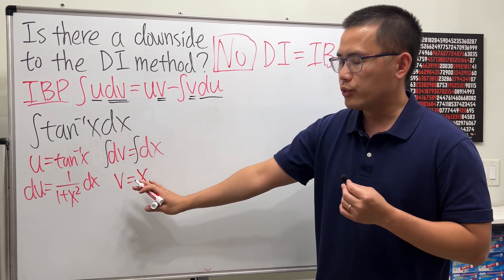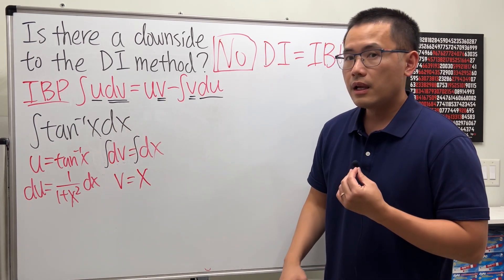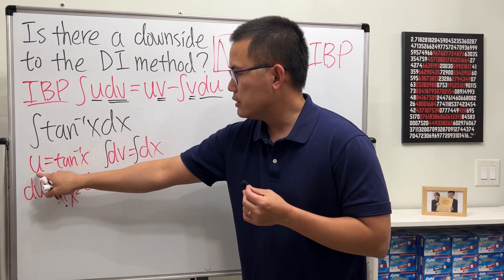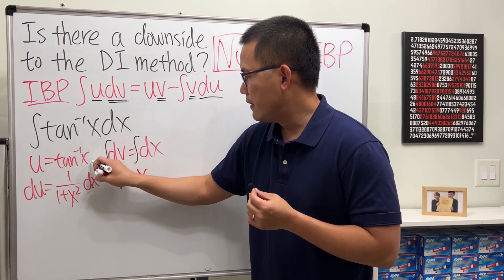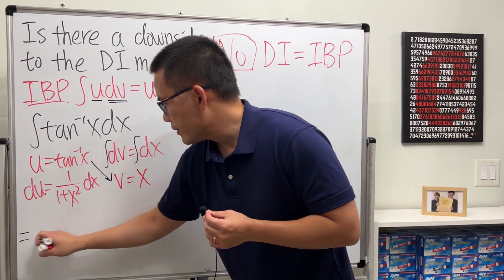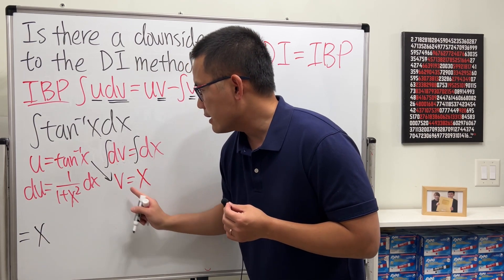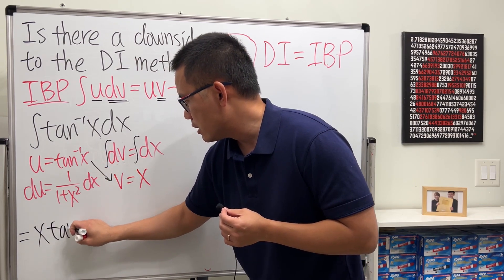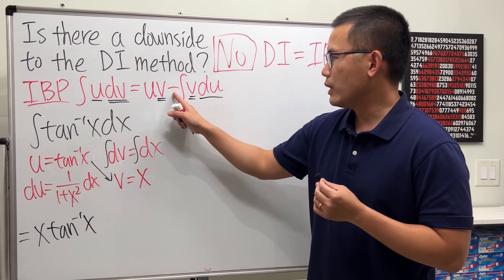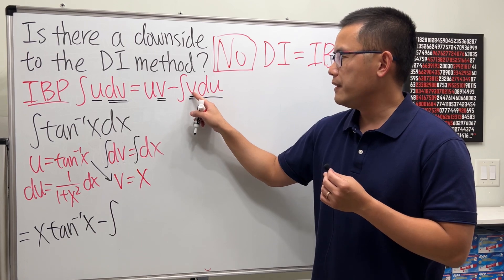And you do not worry about the plus C here because this is the integral that we are trying to integrate. And then, to get UDV, as you can see, it's just this times that very conveniently. So, the first part is going to be this times that. And let me put down the X first. So we have X times inverse tangent of X.